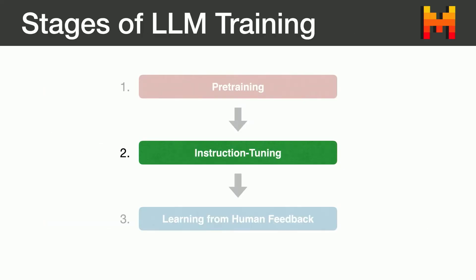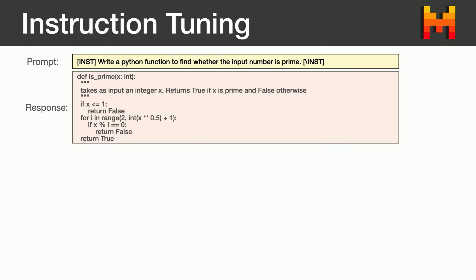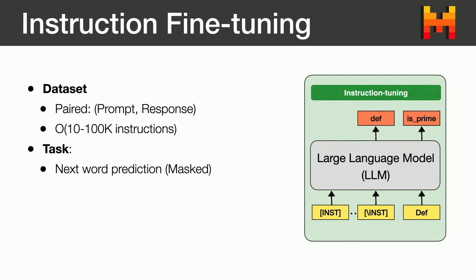This is why we need the next two stages. In the instruction tuning stage, instead of just a string of text, we have prompt-response pairs. We give the prompt in the way humans want to interact with the model — for example, the prompt to write a Python function, and the response is directly the code, because that's what humans want. The technique is very simple — again, we are doing next token prediction, but we mask the prompt in the prompt-response pairs. We typically use hundreds to hundreds of thousands of instructions, and it requires way less compute — on the order of a hundred GPUs for a few hours or days.